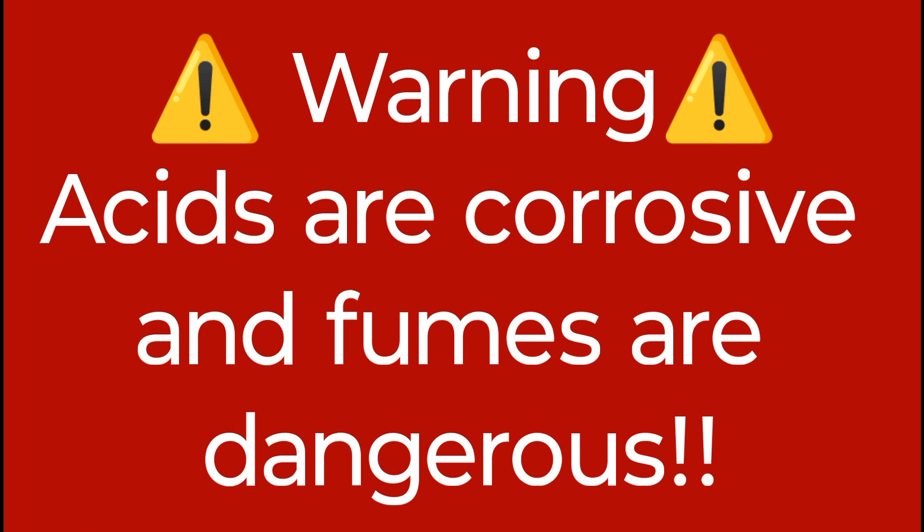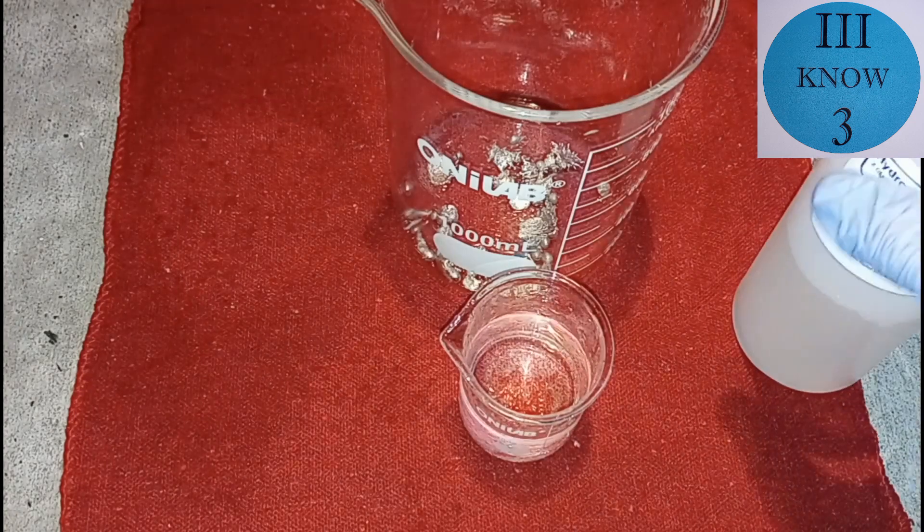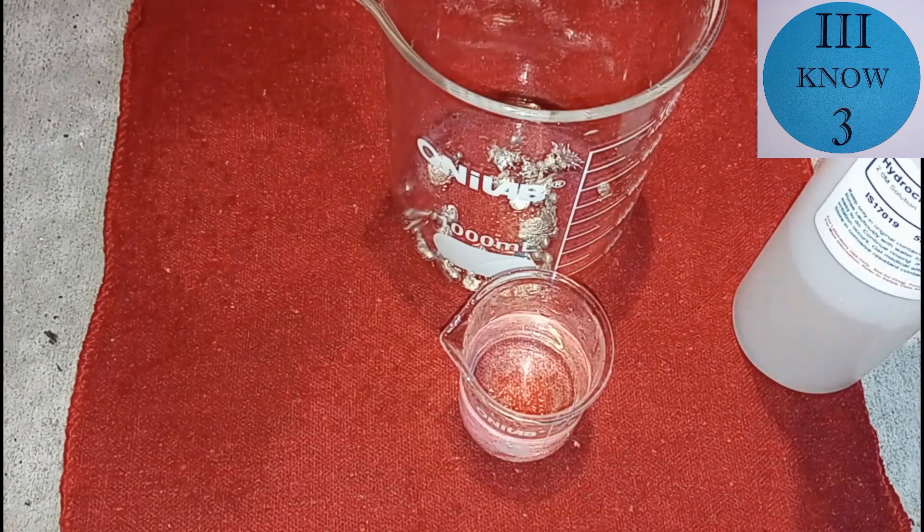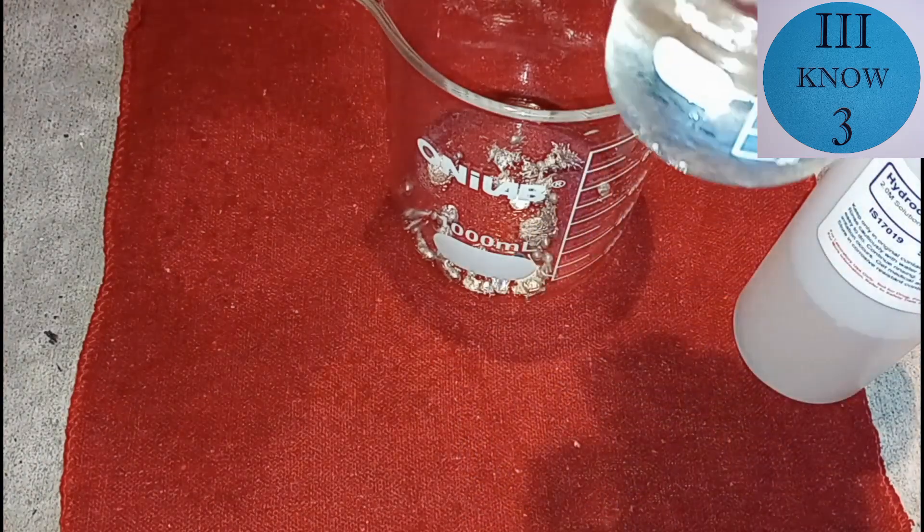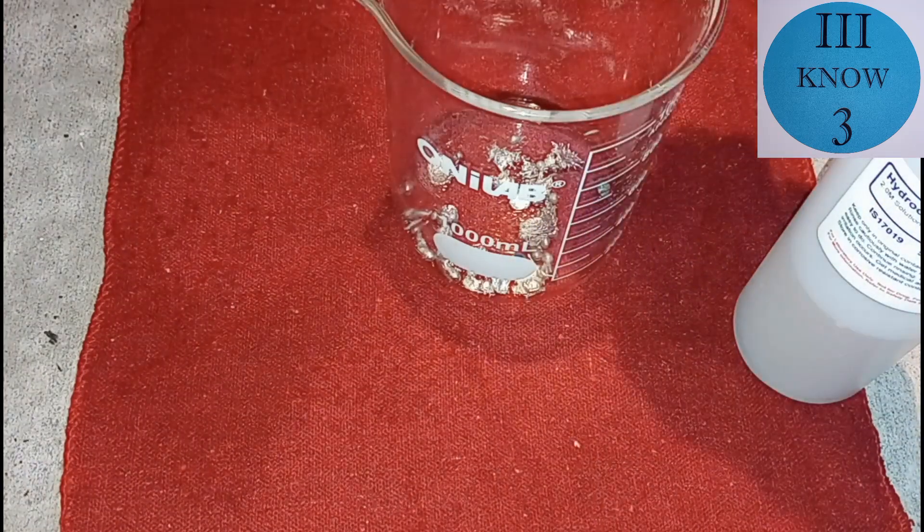Warning, the acids that I'll be working with are highly corrosive and their fumes are dangerous. Protect yourself. So we're going to start off by trying to dissolve this tin shot in hydrochloric acid. This is a 2 molar solution of hydrochloric acid and we're going to start off with about 80 milliliters.